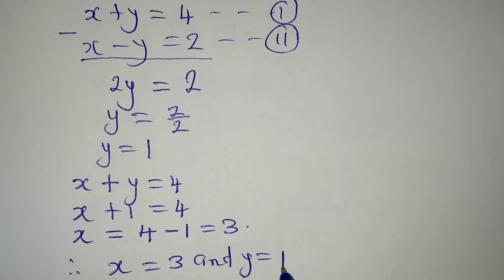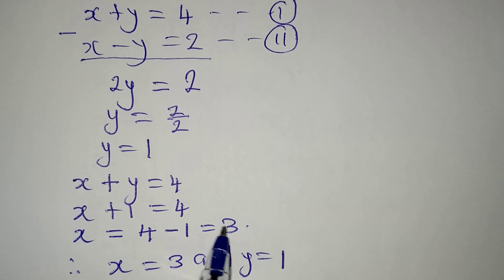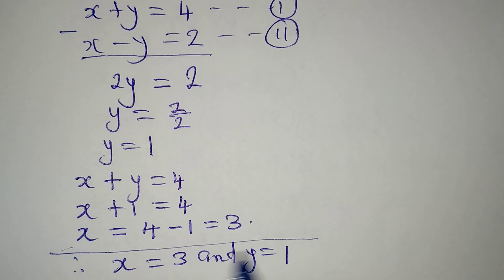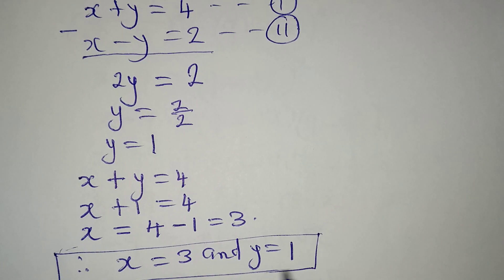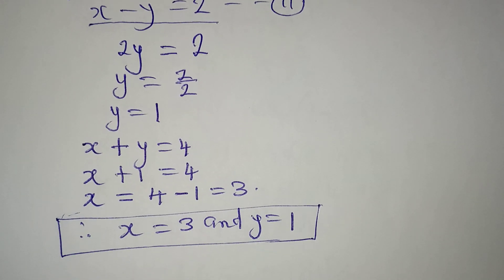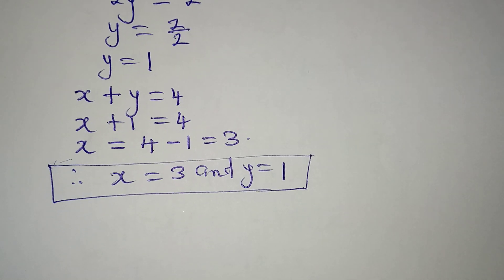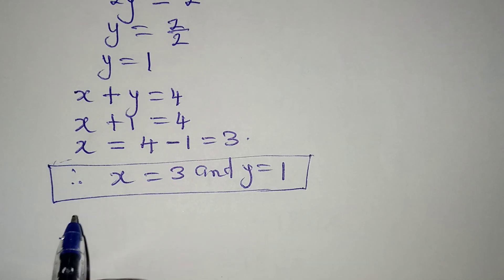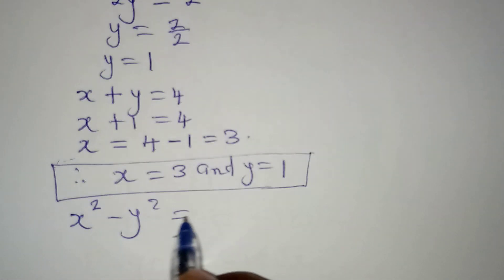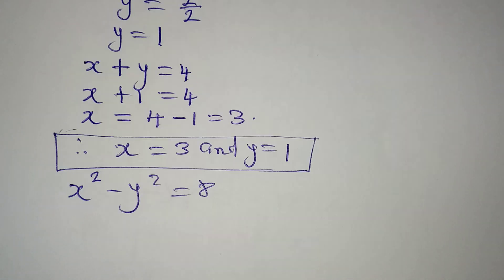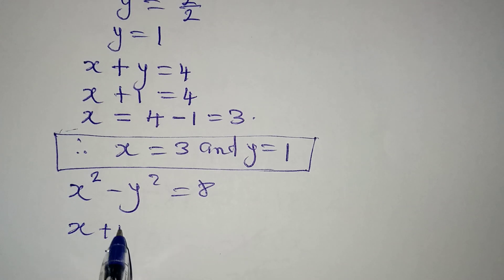Yes — x equals three and y equals one. Now we can still have other solutions to this problem, because eight can also be written as eight times one. So when you have x squared minus y squared equals eight, we can now write this as x plus y into bracket x minus y.